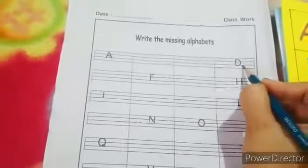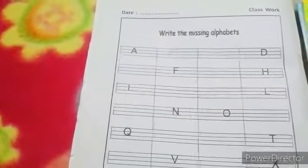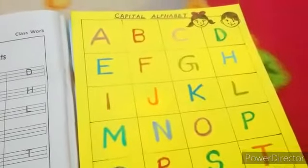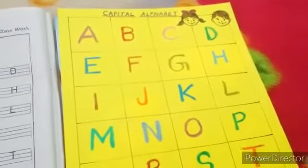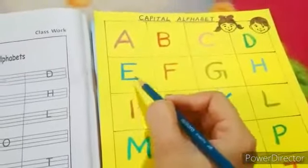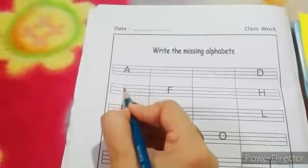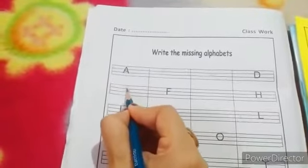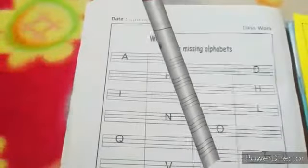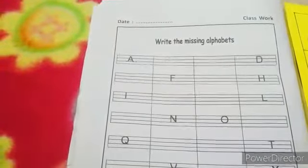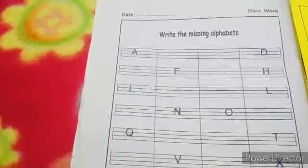D is already given. Let's find out what is the missing letter after D. Let's see the chart again. Now tell me which letter comes after D? Yes, the missing letter is E. So let us write E over here. E. Isn't this an easy process to find out the missing letters? Yes, it is. So let's find out the remaining missing letters in the same manner.